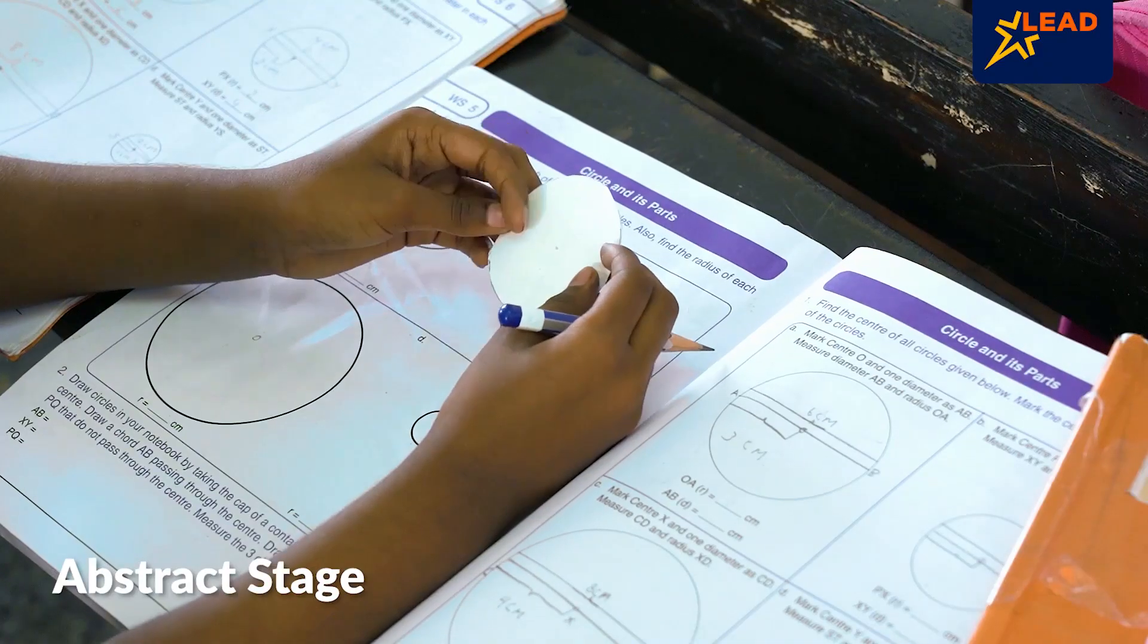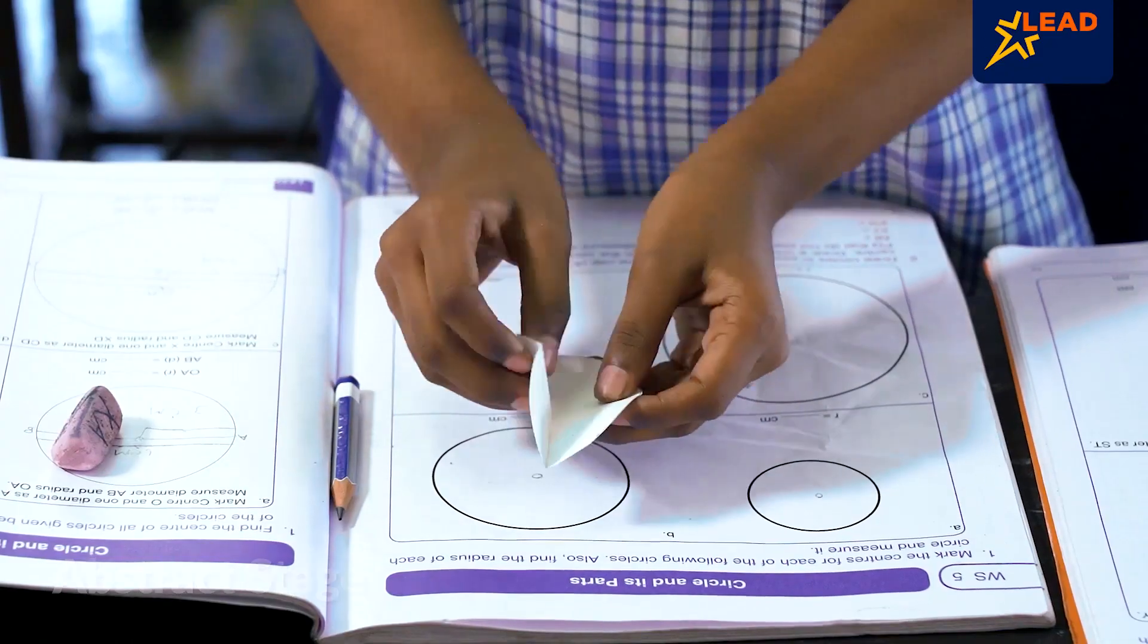Abstract is the final stage where students do math with symbols and numbers.